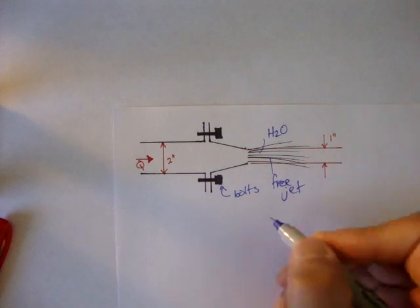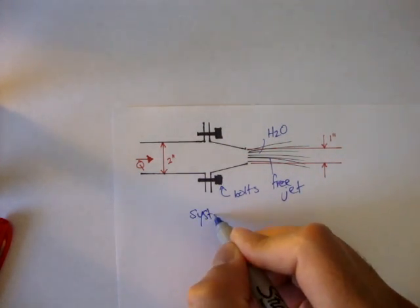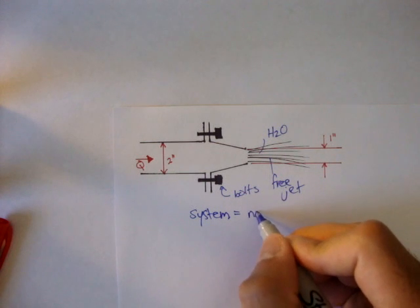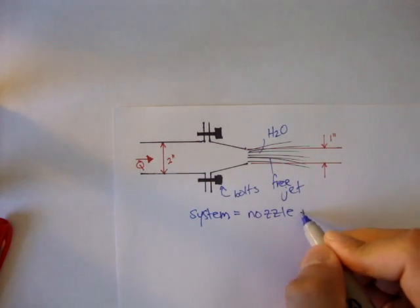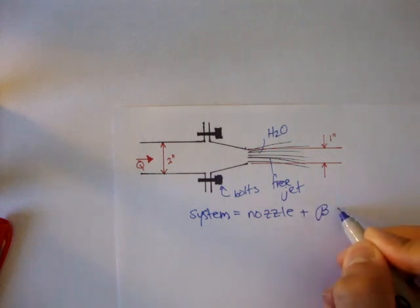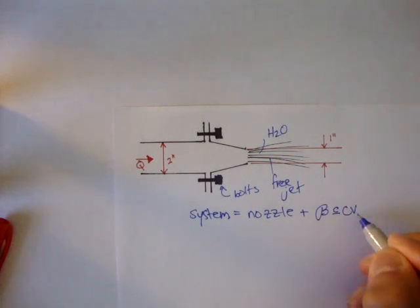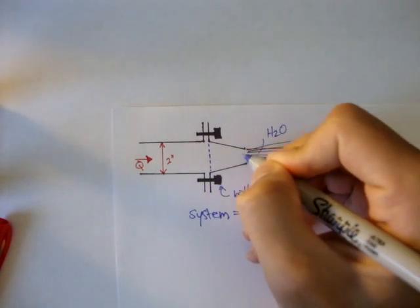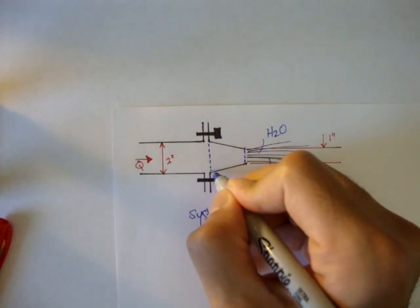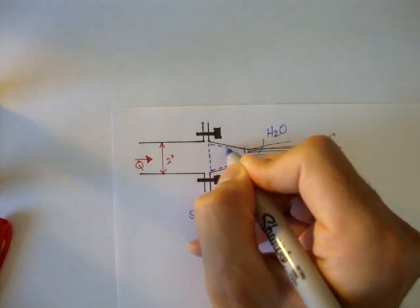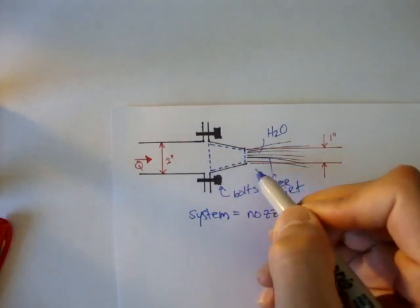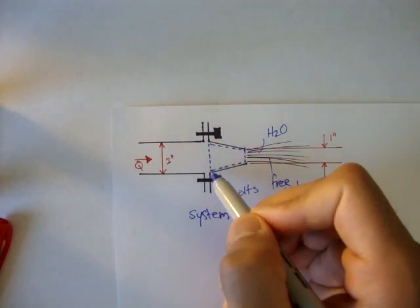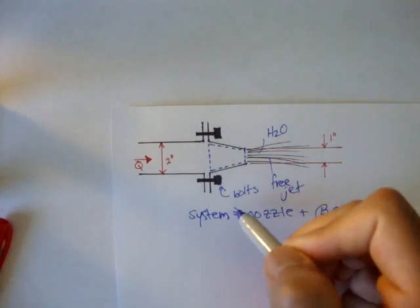And we can model the system as the nozzle. We have the nozzle, and we also have the body of fluid that's contained inside the control volume. And our control volume, I'm going to choose it to be here. The only reason I chose it, because this is where the most dramatic change happens. It goes from two inches to one inch. And we also have the force of the bolts here.